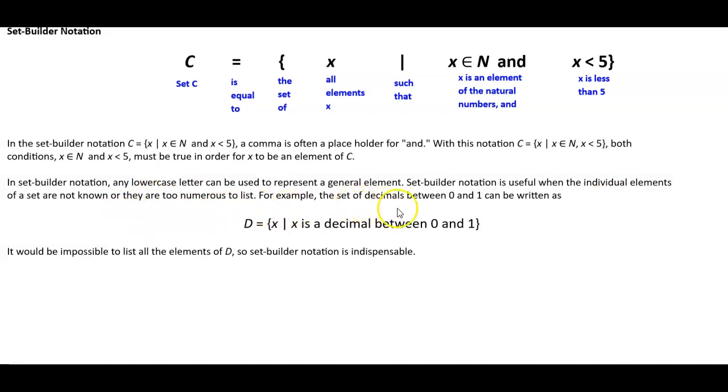So for example, the set of decimals between 0 and 1 can be written as the following: the set D is equal to the set of all elements x such that x is a decimal between 0 and 1. Now it would be impossible to list all the elements of D, so set builder notation is indispensable.